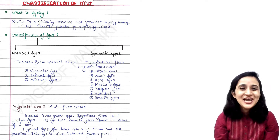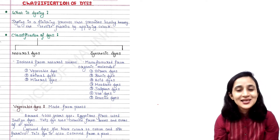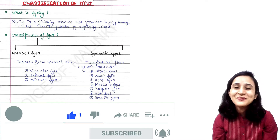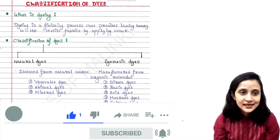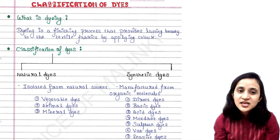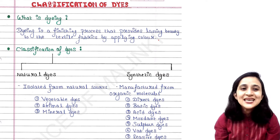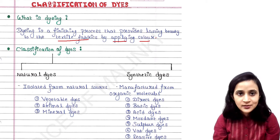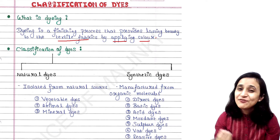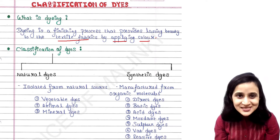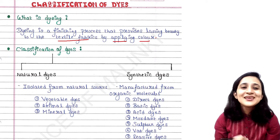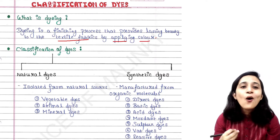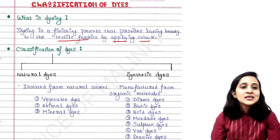Hey guys, this is Malinki, welcome back to my channel Voice of Malinki. Today we will talk about classification of dyeing. So what is dyeing? Dyeing is a finishing process that provides lasting beauty to the textile fabrics by applying color. We have different fabrics — we wear clothes and everything is colorful, so here we use the dye to make those things colorful.